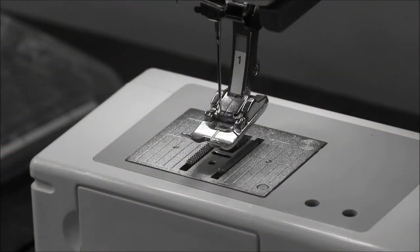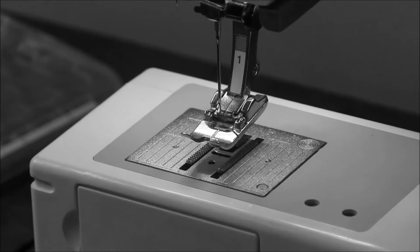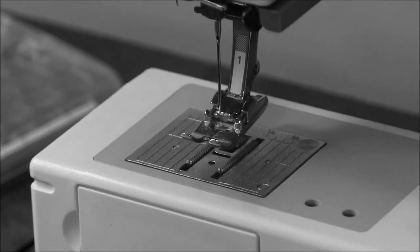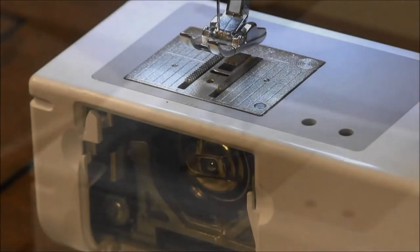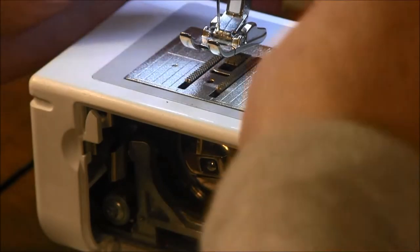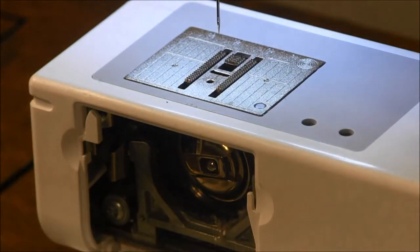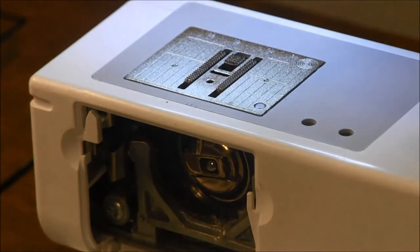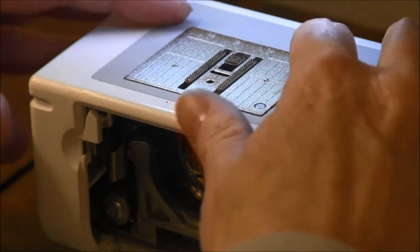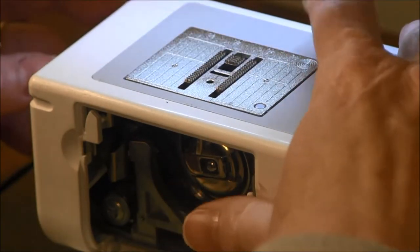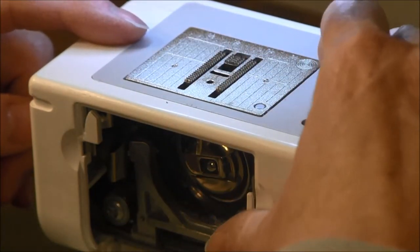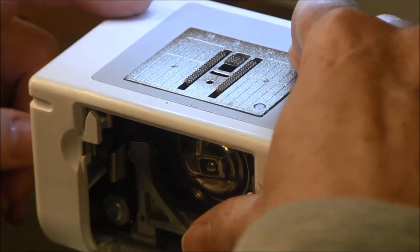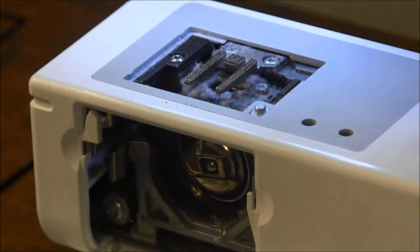So the first step to cleaning your machine is to actually turn the machine off and unplug your machine. Then remove your presser foot and the needle from the machine. Next, press the button, a little bullseye on the corner here, to pop up the presser foot plate and take that off.